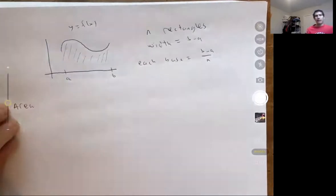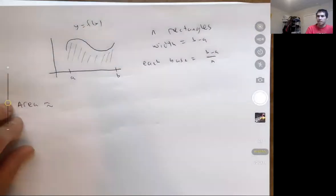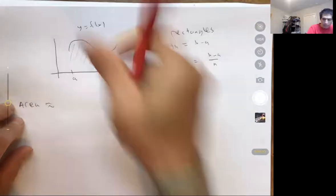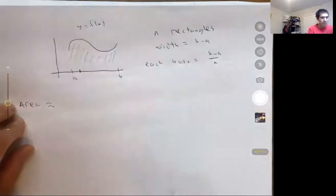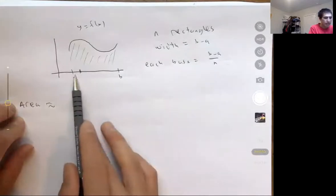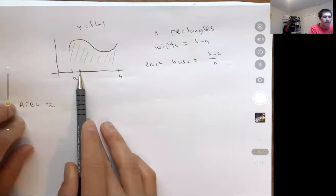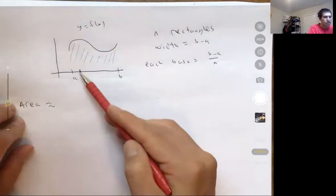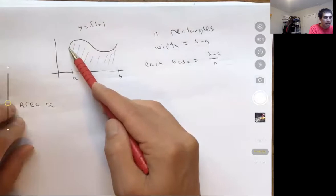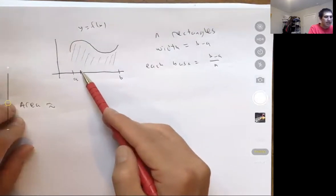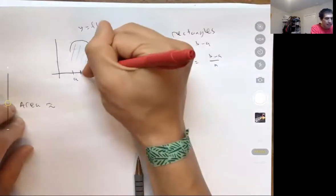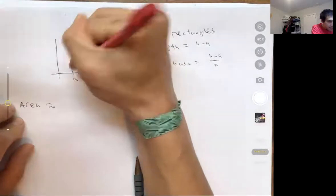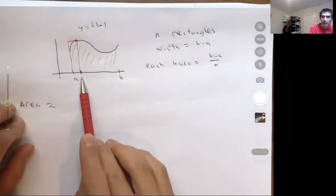The main part is figuring out the height. The area is approximated by base times height for each rectangle. Looking at my first rectangle, starting at a and moving over by b minus a over n, I use the function to determine the height. You can choose any y value the function takes on that interval. For simplicity, I'll use the right-hand endpoint — I go to that x value, up to the function, and use that y value as the height.